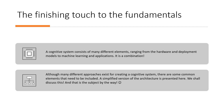A cognitive system consists of many different elements. A lot of elements together actually make a system cognitive, ranging from the hardware and the deployment models to machine learning and applications. It's a combination of hardware plus software, machine learning, deep learning, NLP — many things come together to build a system and to make it cognitive.